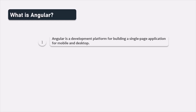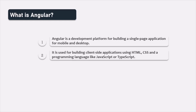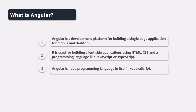Angular is a development platform for building single-page applications for mobile and desktop. We use Angular for building client-side applications using HTML, CSS, and a programming language like TypeScript or JavaScript. Remember that Angular is not a programming language in itself like JavaScript. Instead, it is a framework which uses a programming language like JavaScript or TypeScript.